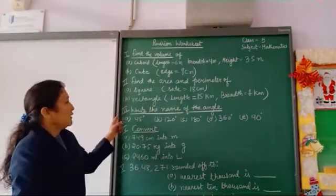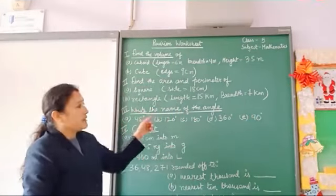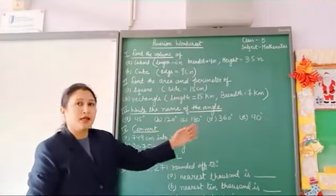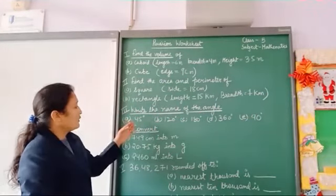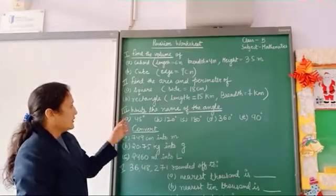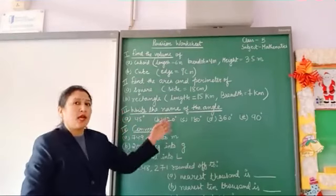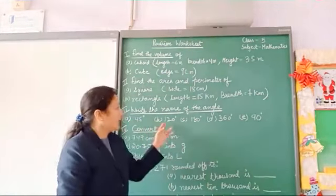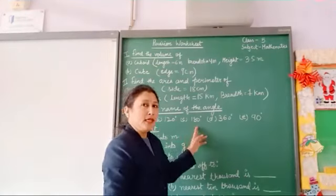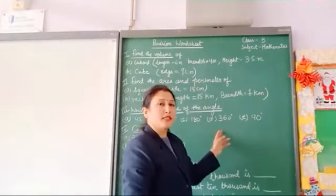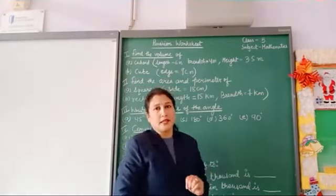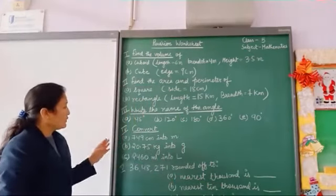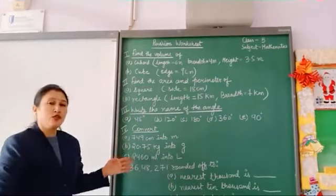In part 3 we have to write the name of the angles. Some degree values of angles are given. You have to find out and write the name of the angles: 45 degrees, 120 degrees, 180 degrees, 360 degrees, and 90 degrees.